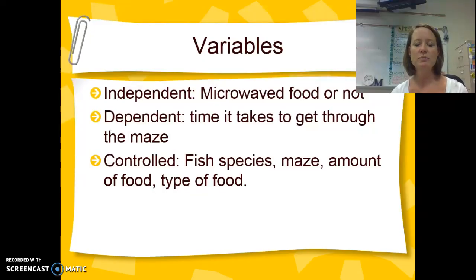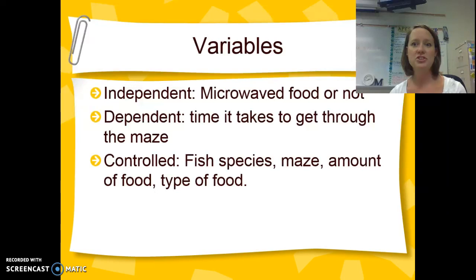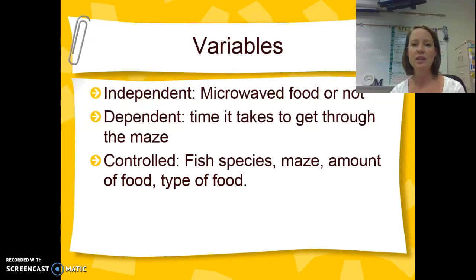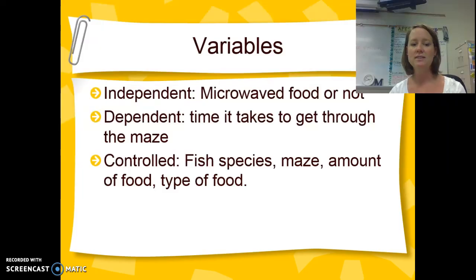Our controlled variables: we want to make sure we have the same fish species, since different species could affect their speed through the maze. We want to use the exact same maze for each fish, so the only thing affecting how they get through is whether or not their food is microwaved. We also want to make sure we have the same type and amount of food — the only variable we're changing is the independent variable, which is whether or not it's microwaved.